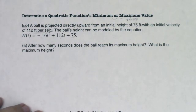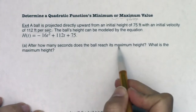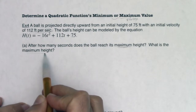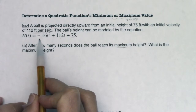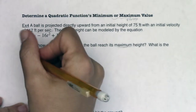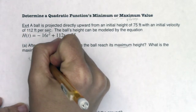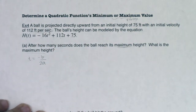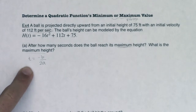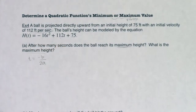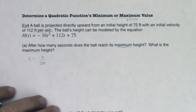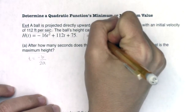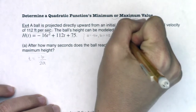We've got time as our independent variable and height as the dependent variable. So we input time and get height back out; we input seconds and get feet back out. Let's try part A: after how many seconds does the ball reach its maximum height, and what is the maximum height? If you have a quadratic function, you have a parabola. To find the max or min, we find the vertex. The x-coordinate of the vertex follows the formula negative b over 2a. We're using t and h instead of x and y here, but it's still legitimate — just different letters. So a equals negative 16, b equals 112, and c equals 75.